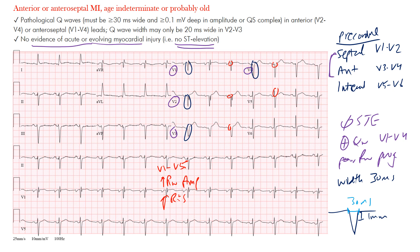Normally, imagine a complex in V1 with a small initial R wave; in V2 a bigger R wave; in V3 a little larger; in V4 even larger; and in V5 larger still. The R wave increases in amplitude — that's normal R wave progression. At the same time the S wave amplitude decreases and is almost gone in V5. That's the increase in the R-to-S ratio as well.